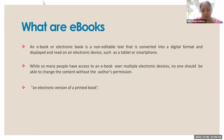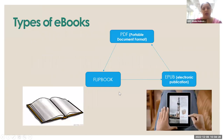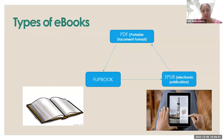At NCERT we use three types of digital books: PDF, Flipbook, and ePub. PDFs are the oldest, developed in the early 90s by Adobe. We are very familiar with PDFs — NCERT books are available in PDF format on the NCERT website. PDFs are image-based and device-specific; an old PDF may not open on a new device, and a new PDF may not open on an old version.